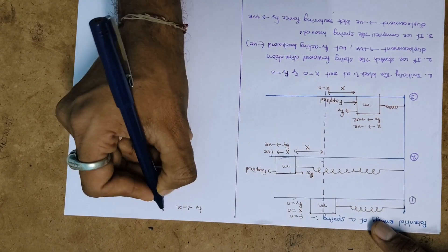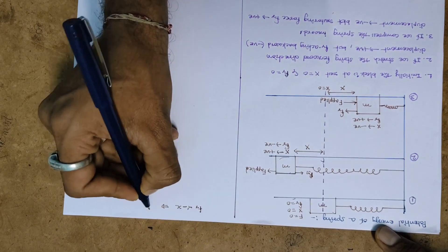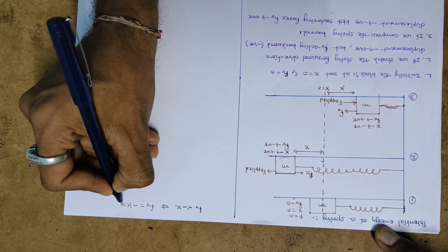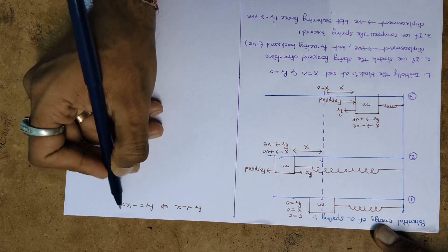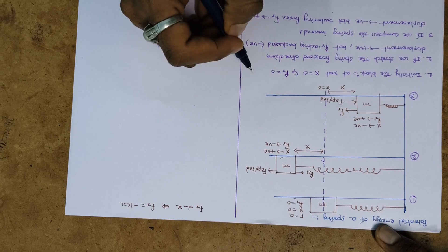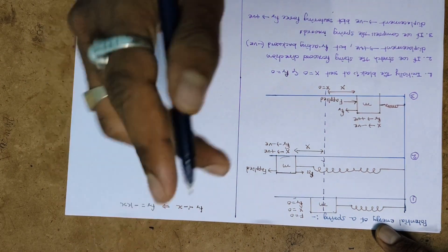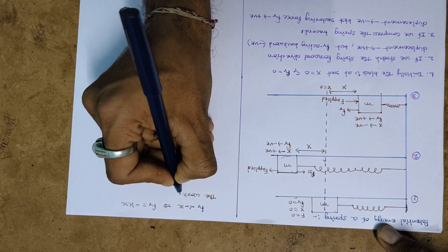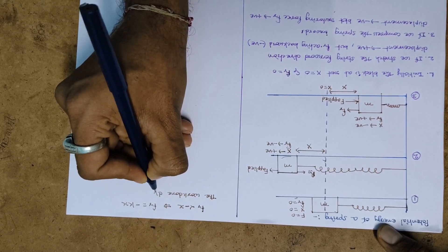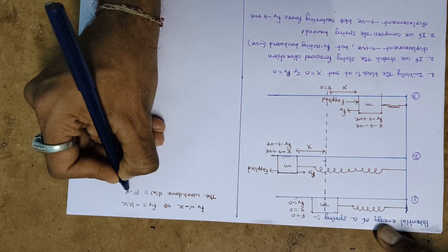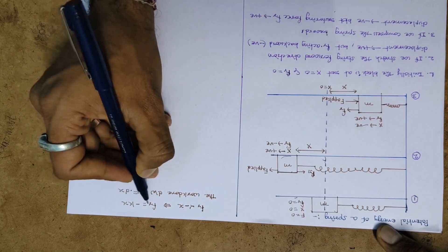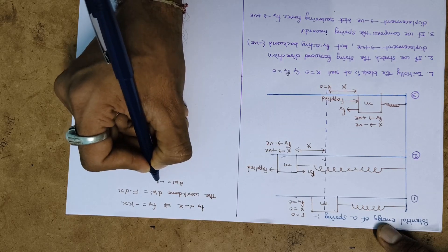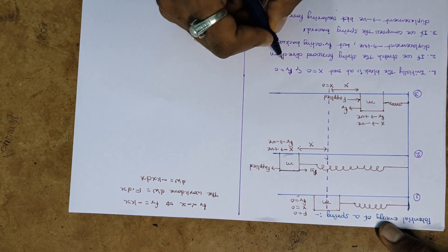Removing the proportionality constant, we can write it as Fr equals minus k times x, where k is the spring constant. Since the object is displaced when the restoring force acts, the product of force and displacement is called work done. So the small work done dW equals F dx, and using the restoring force: dW equals minus kx dx.